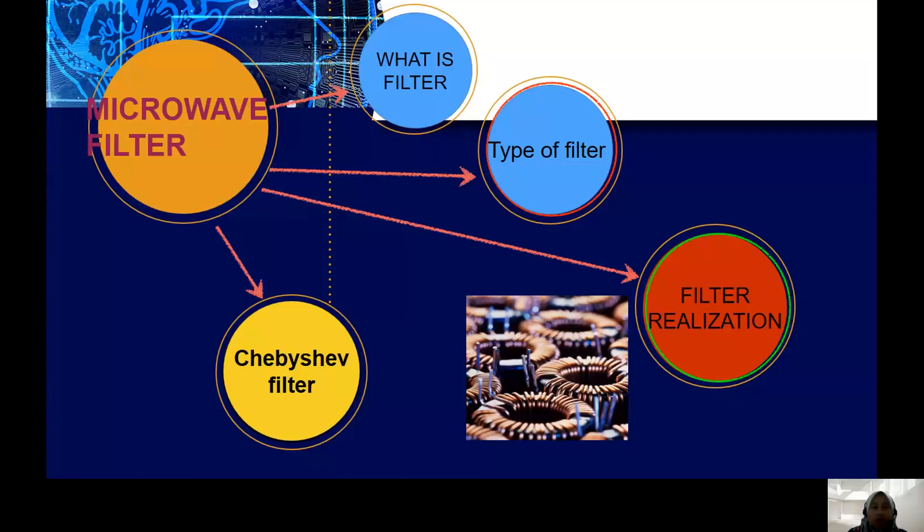As an introduction, microwave filter is a linear two-port network that controls the frequency response at a certain point in a microwave system. It provides perfect transmission of signal for frequencies in a certain passband region.